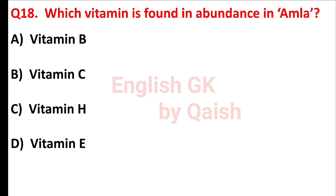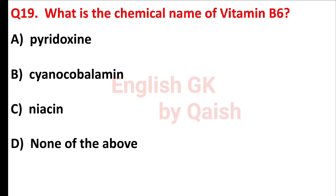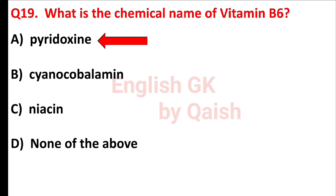Which vitamin is found in abundance in amla? Answer is option B, vitamin C. What is the chemical name of vitamin B6? Answer is option A, pyridoxine.